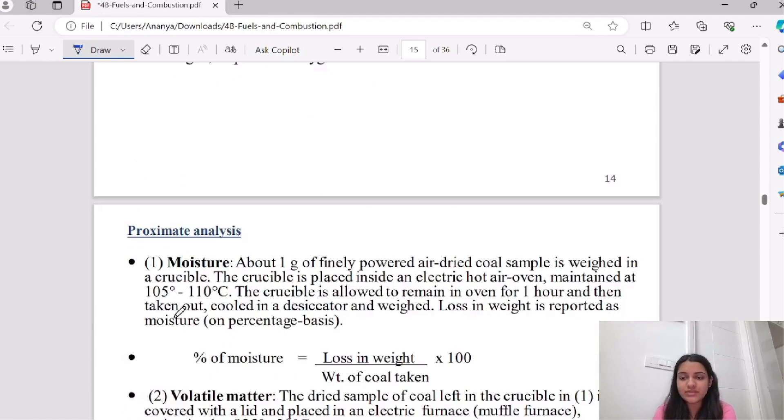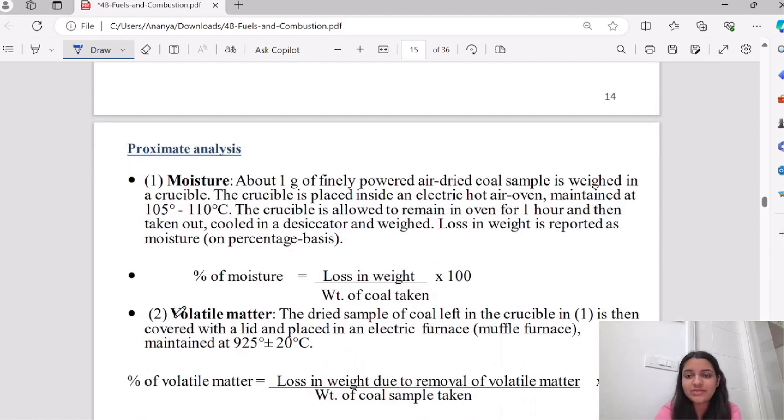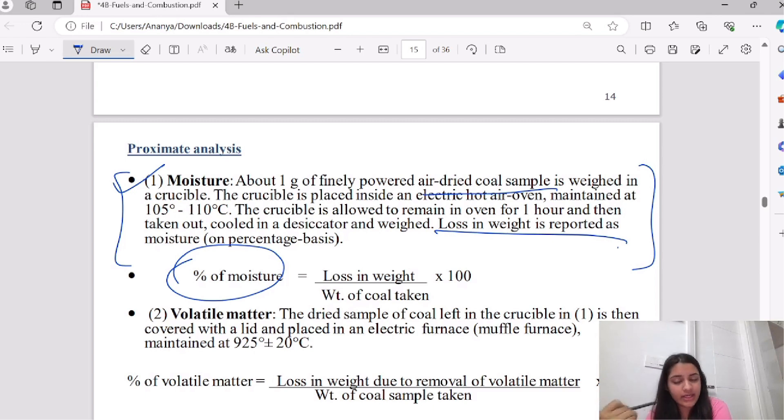First, let's discuss proximate analysis. First, I have moisture. I will share this PPT with you. Loss in weight - how do we derive the percentage of moisture? Weight of ash left upon weight of coal taken multiplied by 100. This is the main formula for percentage of moisture.